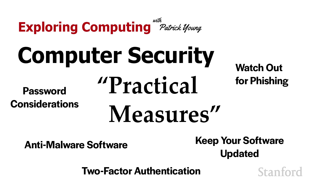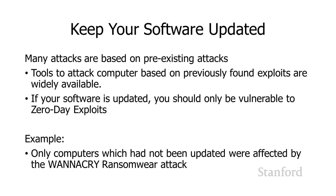We've seen a bunch of pretty scary ways our computers can get attacked, so what can we do to protect ourselves? The number one thing is definitely keep your software updated. It's super simple and pretty straightforward. Remember that many attacks are based on preexisting ways of attacking your computer — there are lots of tools out there that people can just pick up off the shelf and use to attack a computer. If your software is updated, you will be protected against all attacks except for zero-day exploits. It's far more likely that you will be attacked using something that already exists and is known about than something we don't know about.